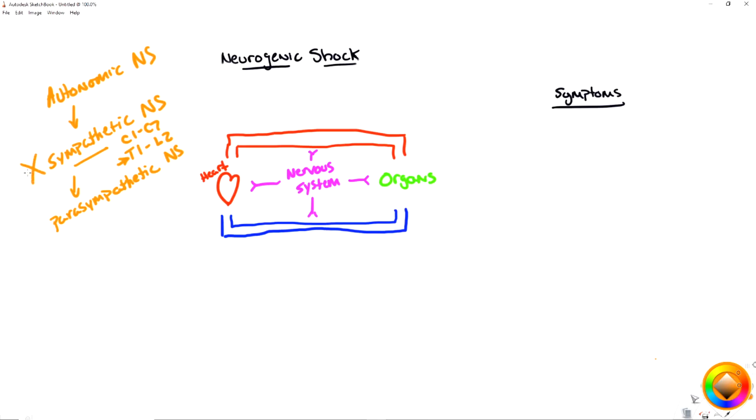All of the neural signals that are going from the brain to these T1 through L2 nervous system roots don't have any sympathetic messages. All the messages that are getting through are the parasympathetic messages.